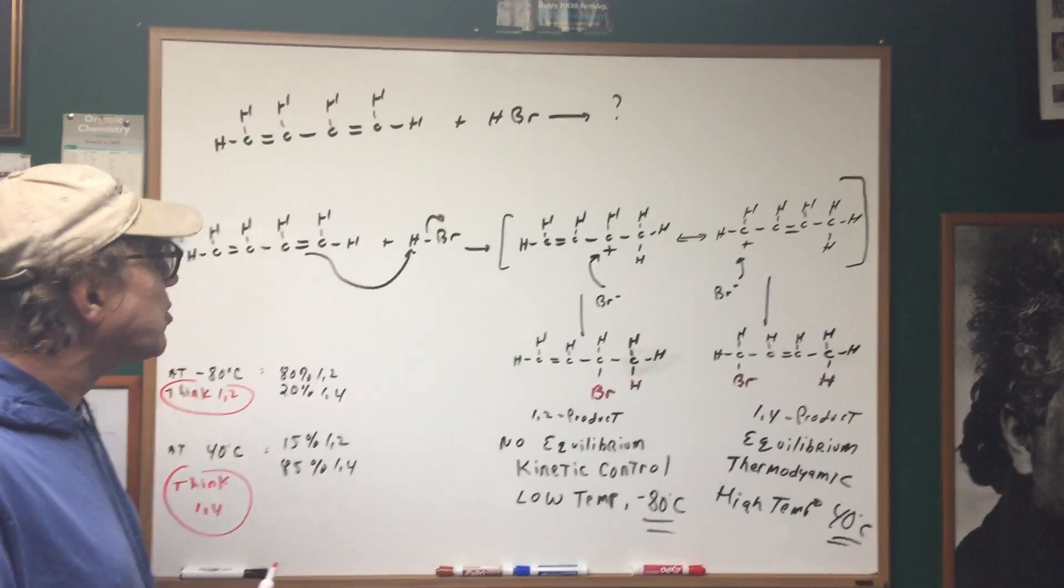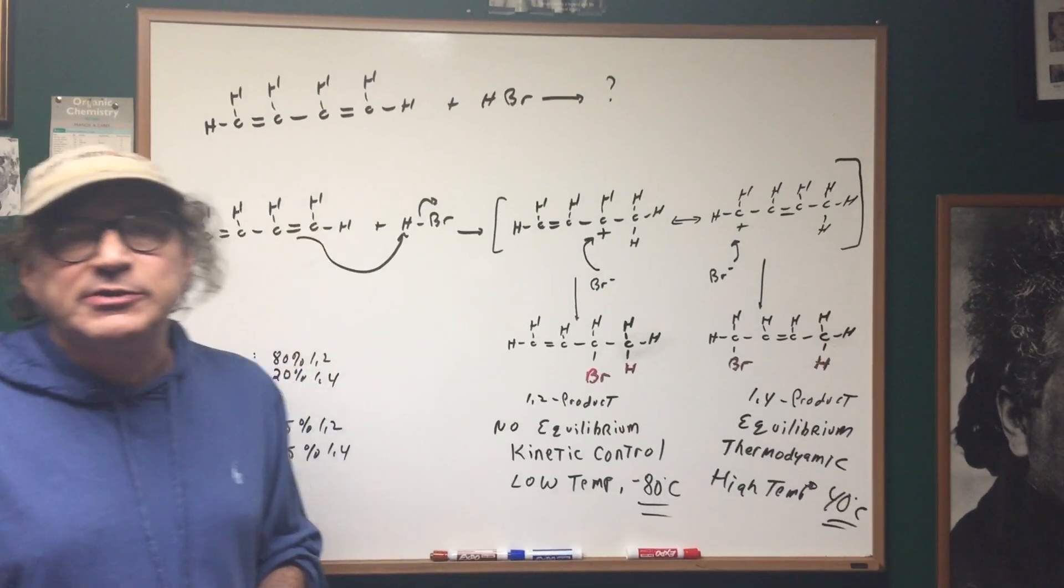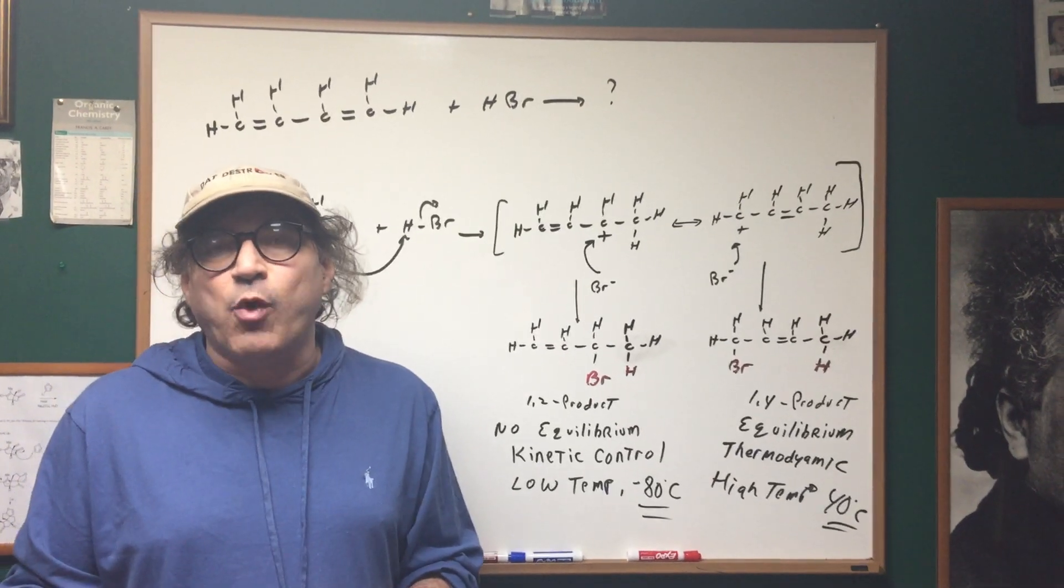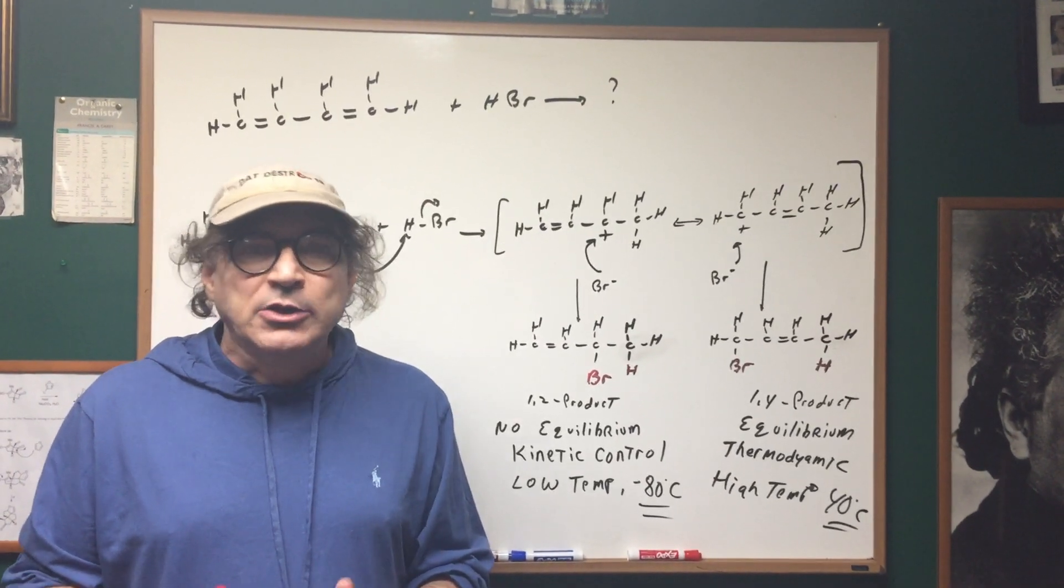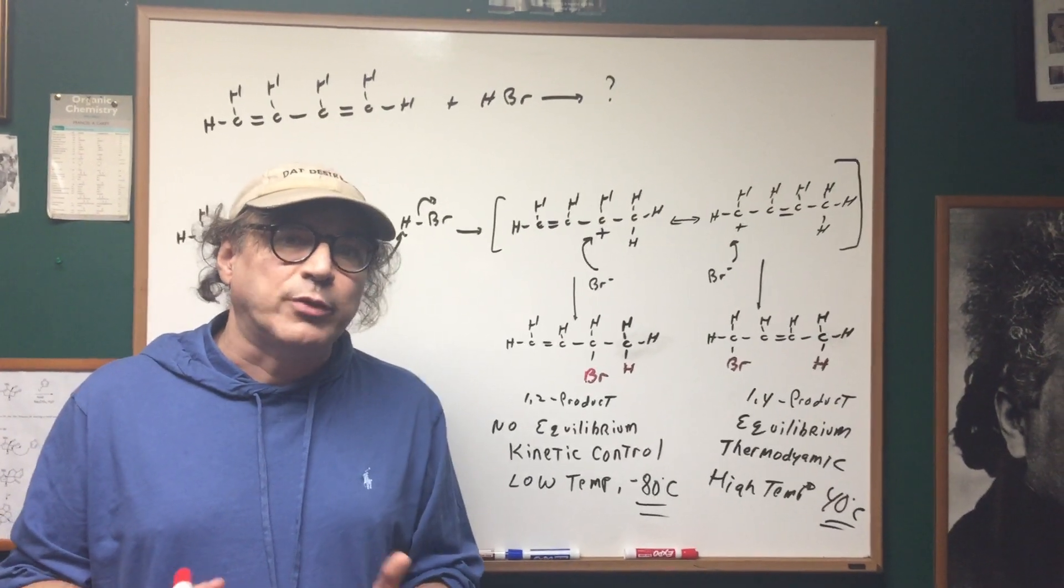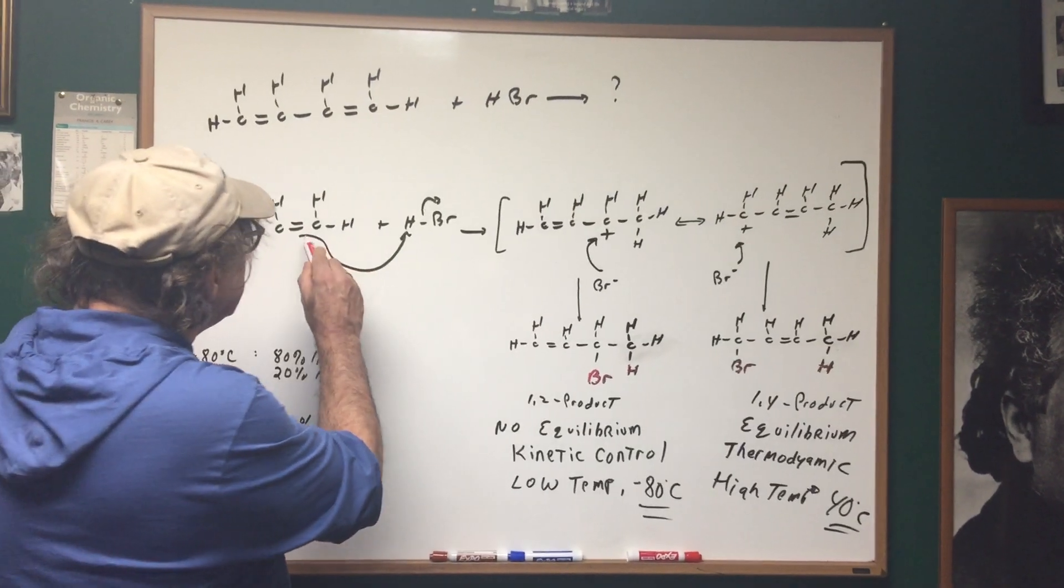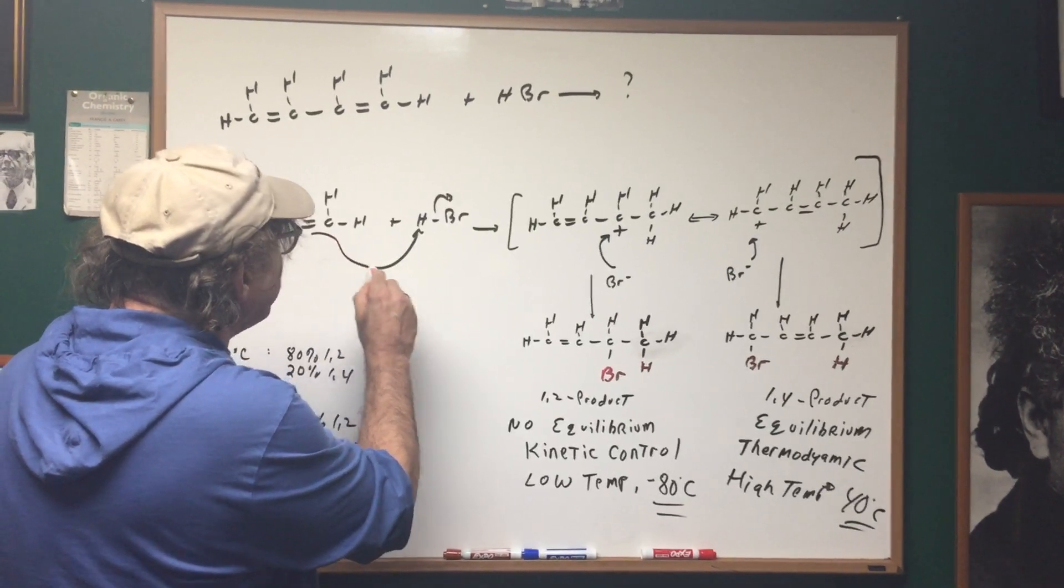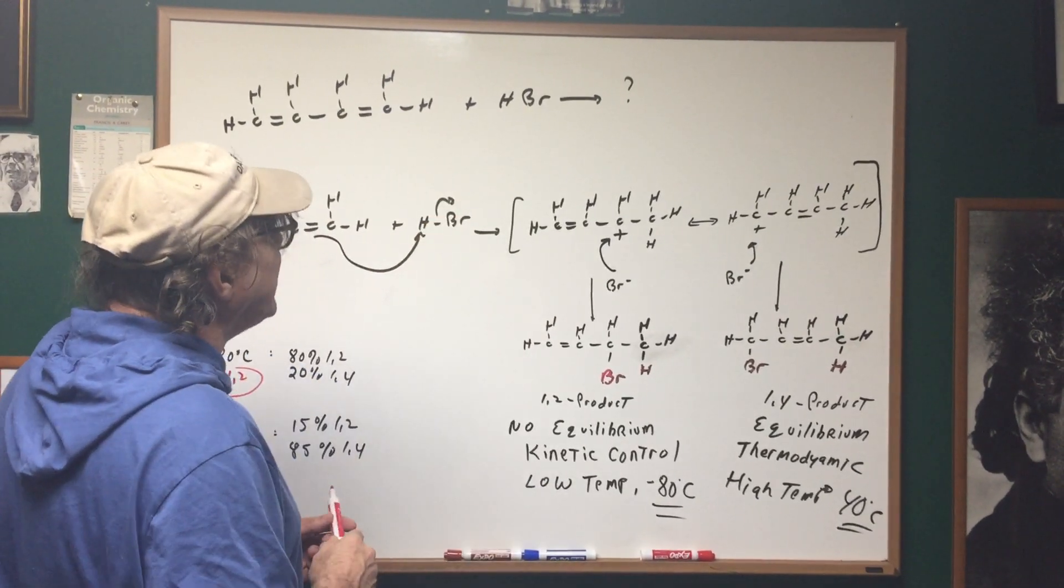Now let's go over the mechanics of what happened. In the very first step of the mechanism, I want to form the most stable carbocation. So I'm going to invoke the Markovnikov rule and add to the carbon with the most hydrogens. As you can see, the double bond reaches out and grabs the H.